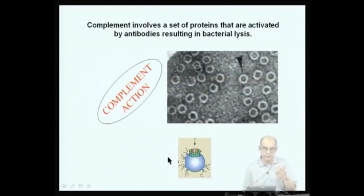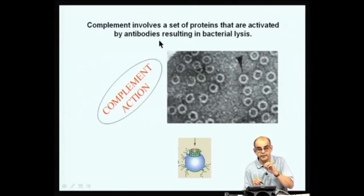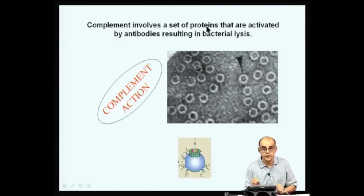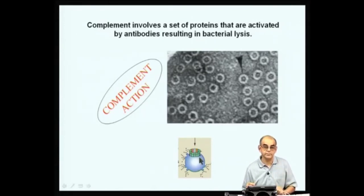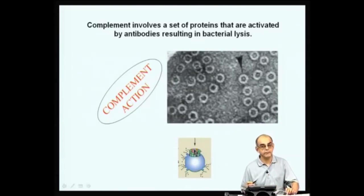What does complement involve? Complement actually involves a set of proteins, which you will be studying in later classes, that are activated by antibodies. When antibodies bind to the bacteria they are specific to, these antibodies have the ability to activate a set of nine fragments of complement, which actually come together to form a pore into the cell to which the antibody has bound. These pores have actually been visualized by electron micrographs — you can see them so clearly. These pores actually allow the contents of the cell to lyse out, and therefore you have bacterial lysis.